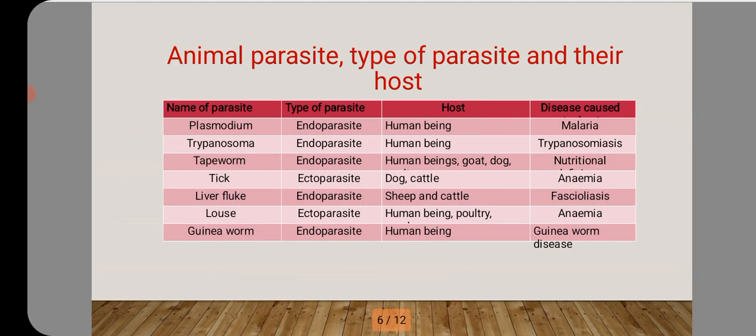We have a chart that talks about animal parasites, the type of parasite, their host, and the disease they cause. The first one is plasmodium. Its type of parasite is endoparasite, meaning inside the body of the host. The host is human beings, and the disease it causes is malaria. Anytime you have malaria, the parasite plasmodium is what is found in your body causing that disease.